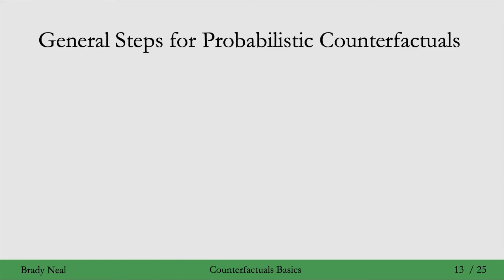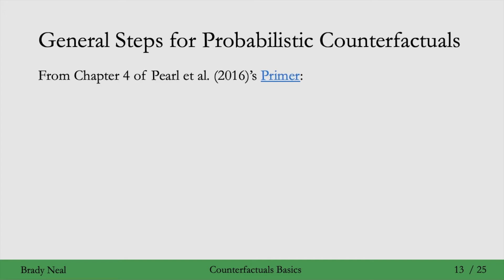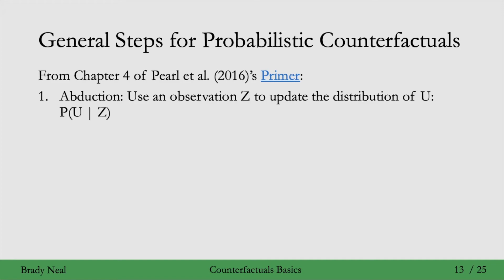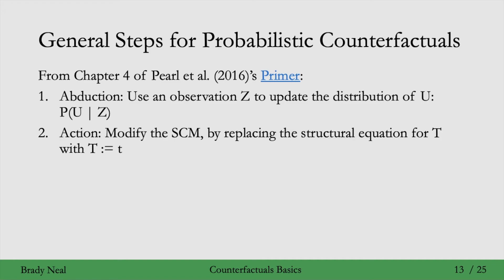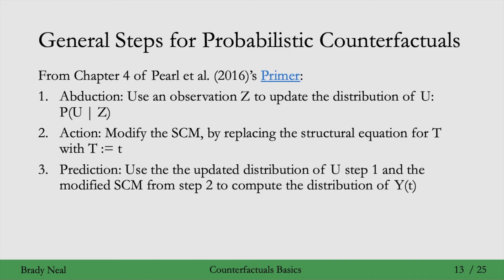There are three general steps for this probabilistic counterfactual case as well, also from chapter 4 of Pearl's Primer. The first step, instead of uniquely determining the value of u, we update the distribution of u given some observation z. The second step is exactly the same — replace the value of t with the specific little t we're interested in for the counterfactual. Step 3 combines steps 1 and 2, but now we get a non-degenerate distribution for the counterfactual — it will not place all of the probability on one value.